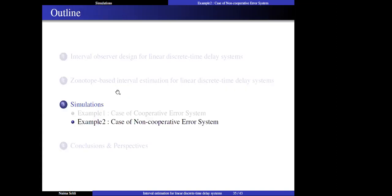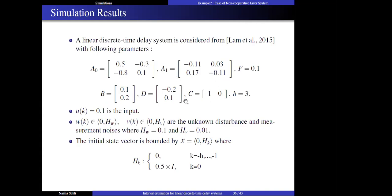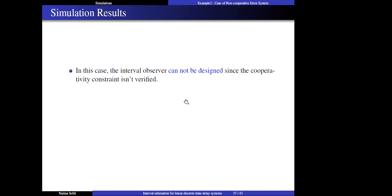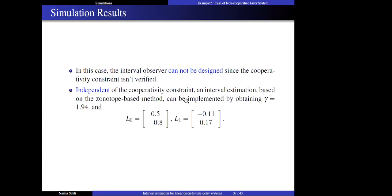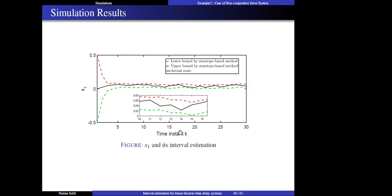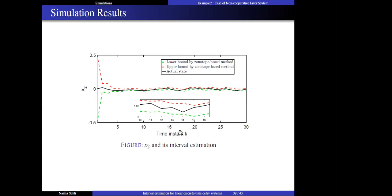The second numerical example further illustrates the effectiveness of the zonotope-based method with different system parameters. In this case, the interval observer cannot be designed since the cooperativity constraint is not satisfied. However, independent of this constraint, interval estimation based on zonotopes can be implemented, obtaining gamma equal to 194 and gain matrices L0 and L1. The simulation results show the state coordinates with corresponding bounding variables from the zonotope-based interval estimation. Compared with the interval observer design, the zonotope-based method is independent of the cooperativity constraint and gives more accurate estimation results.